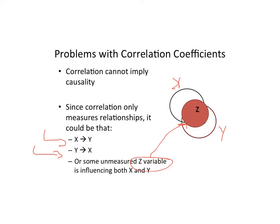There would be a correlation as those children's feet get bigger — they know more math. But is it really the feet that are causing that, or is it some outside factor, like they're getting older and therefore they're also taking more math classes? They're going to know more about math in 7th grade than they do in 2nd grade when they have smaller feet. So, we cannot imply cause and effect.